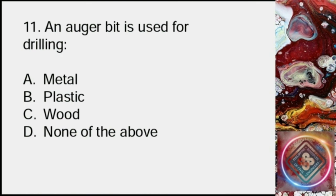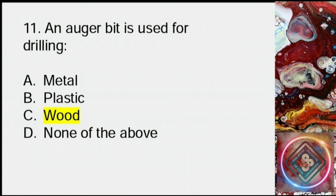Question 11: An auger bit is used for drilling: A: Metal, B: Plastic, C: Wood, D: None of the above. Answer: C, wood.